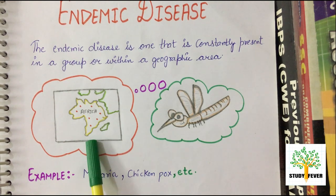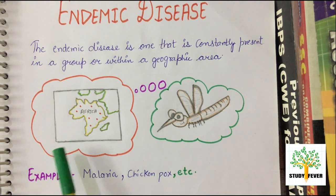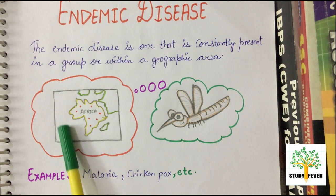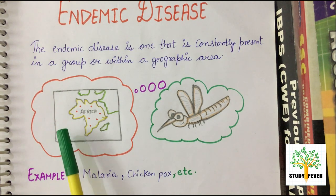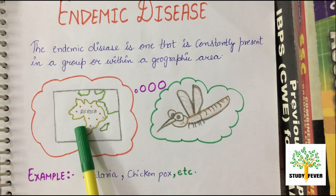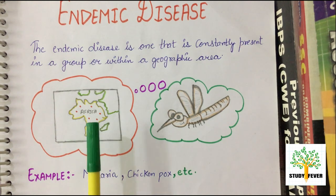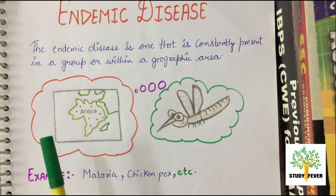For example, if I talk about Africa, every single year a fixed number of people die due to malaria. Malaria is not a worldwide disease, but particular parts, states, and regions of Africa are heavily affected by it, with 70–80 cases coming in every year.